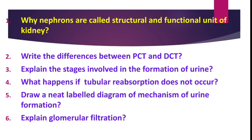Why are nephrons called the structural and functional units of the kidney? Millions of nephrons are present in each kidney — nearly 1.3 to 1.8 million. These nephrons are the filtering units in the kidney. The main function of the kidneys is to filtrate the blood, which occurs only in the nephrons.